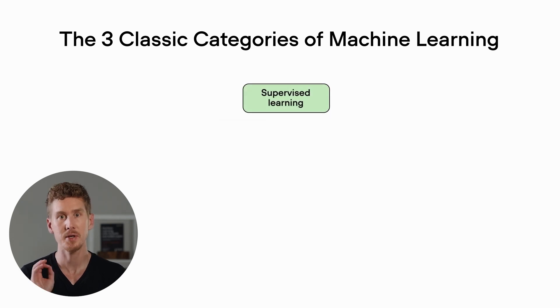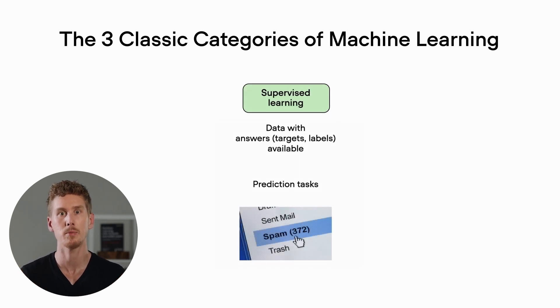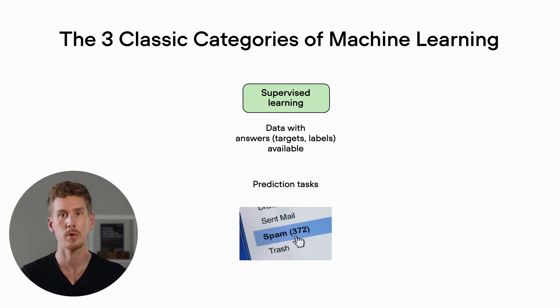Supervised learning essentially describes the task of making predictions. In supervised learning, we are given data and the corresponding labels that we want to predict, and those labels are then used for training the model.